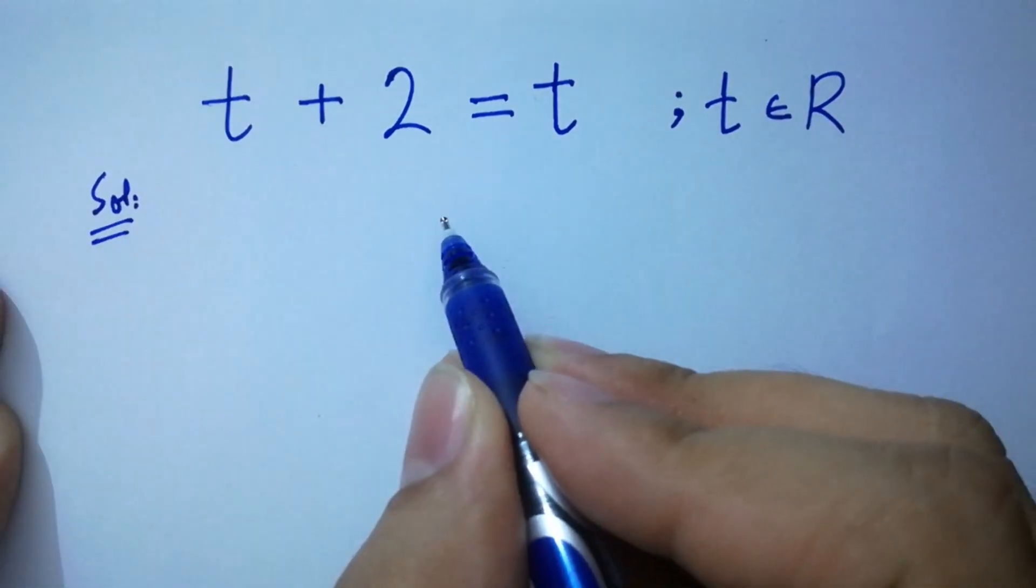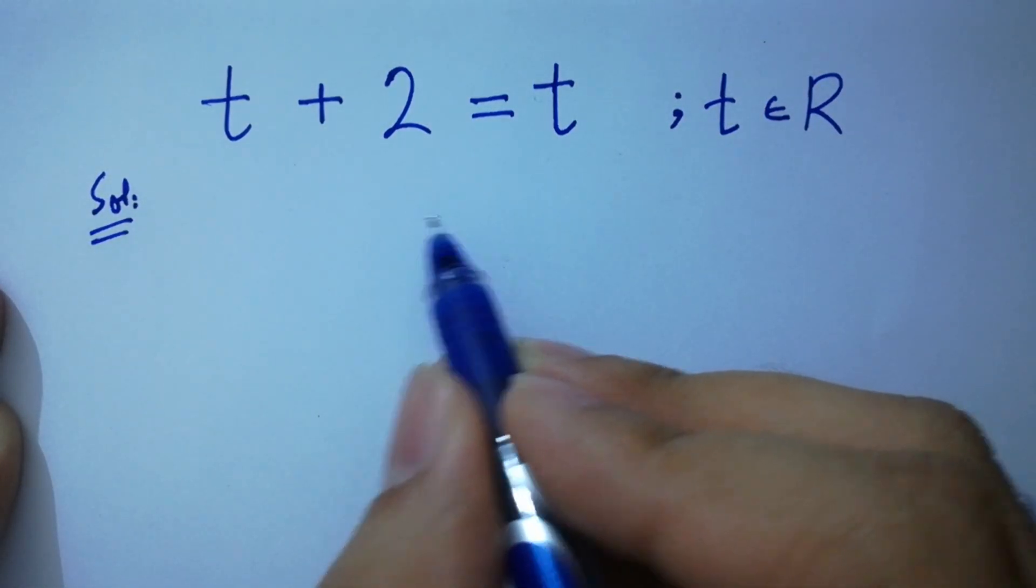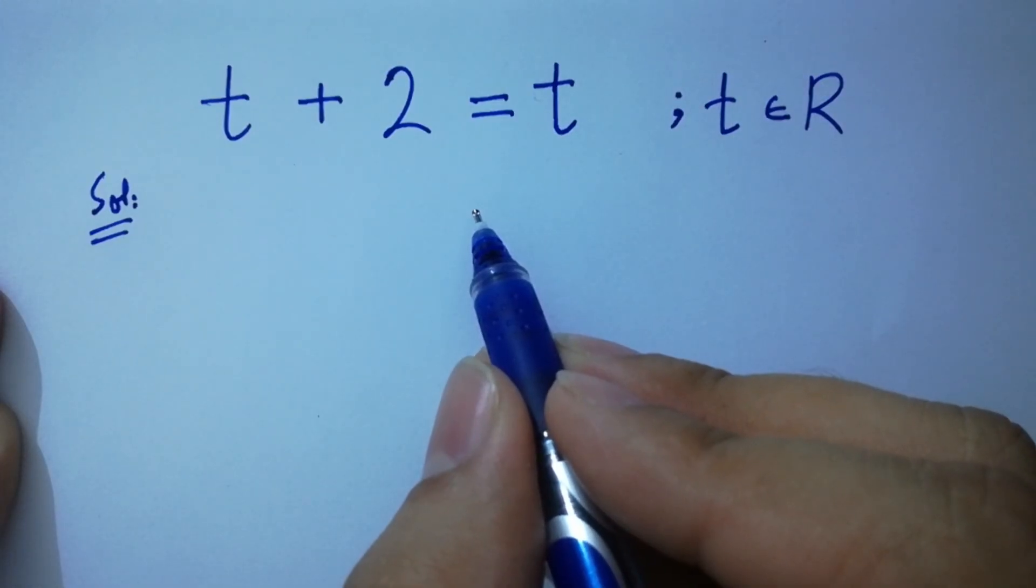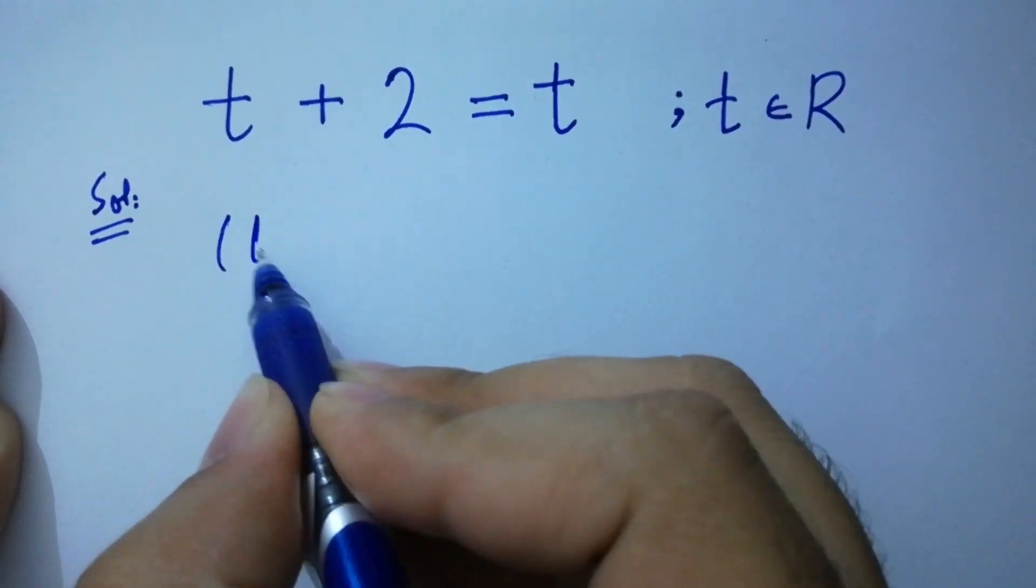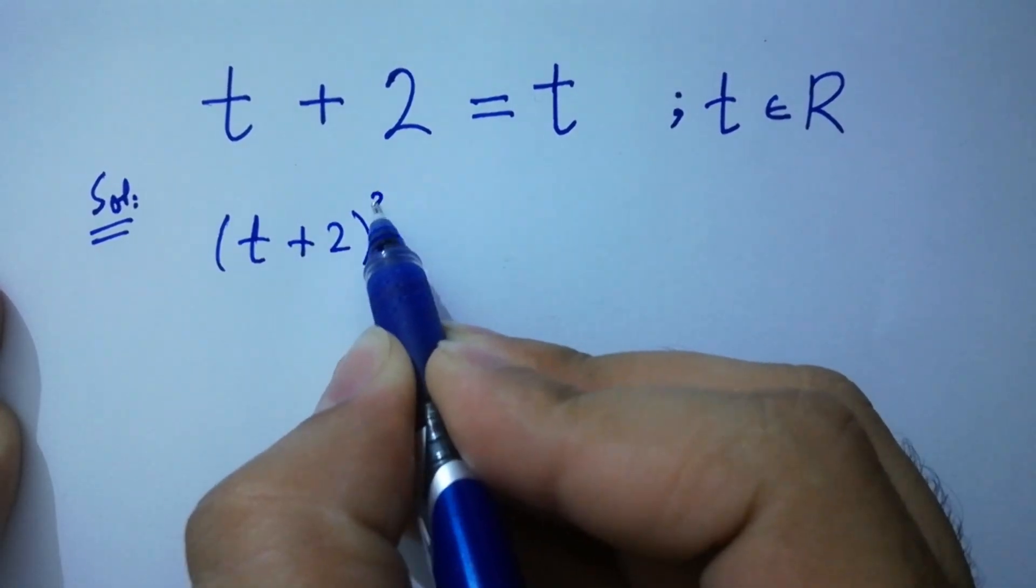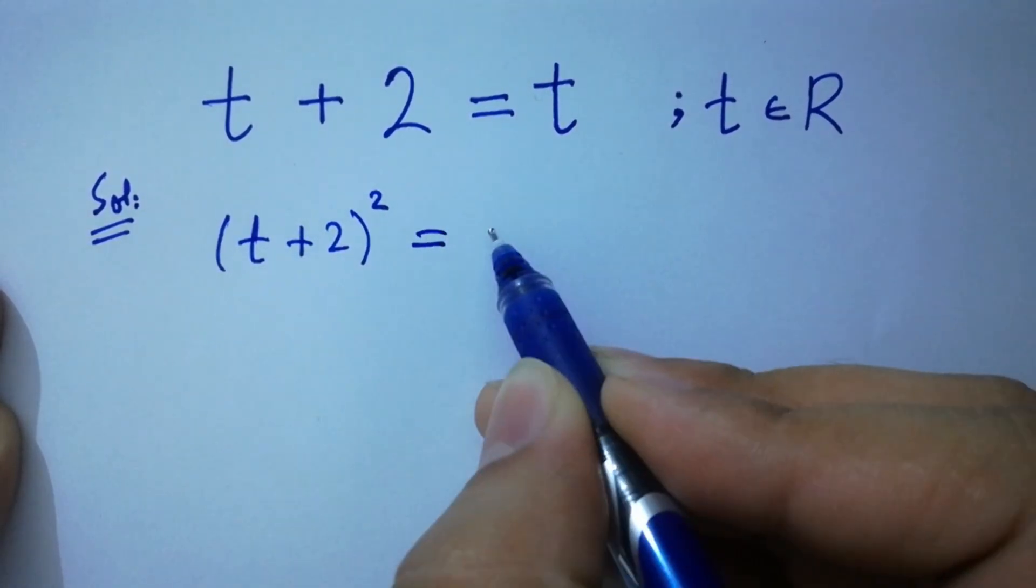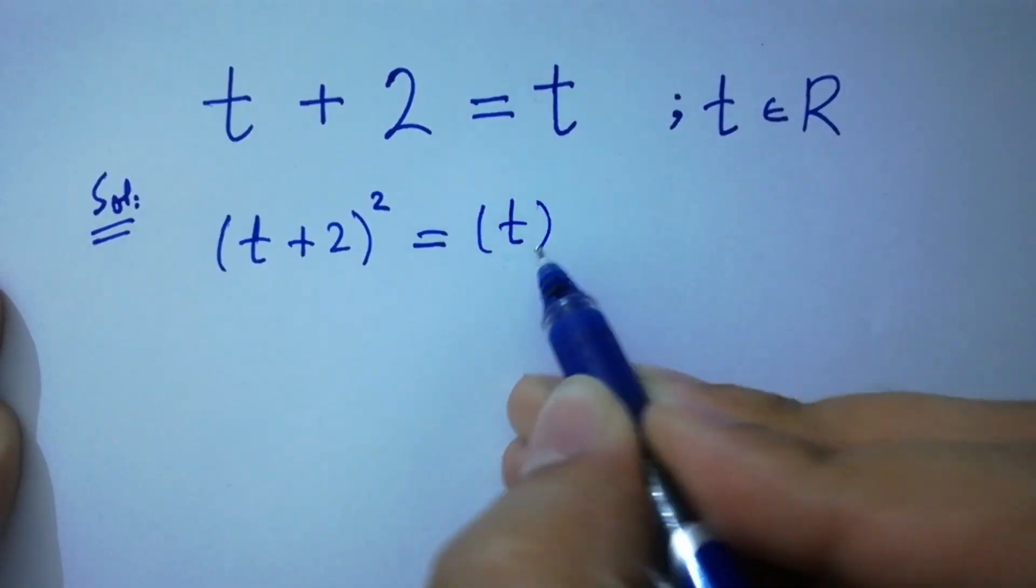To solve this problem, take square on both sides. If you know another method to solve this, must do the comments. t plus 2 whole square equals t square.